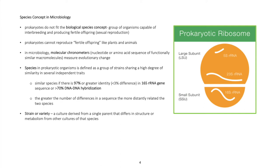Species in prokaryotic organisms is defined as a group of strains sharing a high degree of similarity in several independent traits. Similar species if there is 97% or greater identity, less than 3% difference, in 16S rRNA gene sequence, or greater than 70% DNA-DNA hybridization. The greater the number of differences in a sequence, the more distantly related the two species.